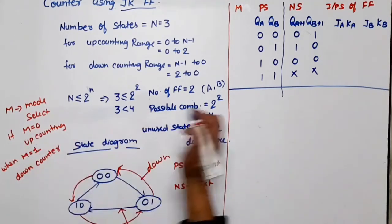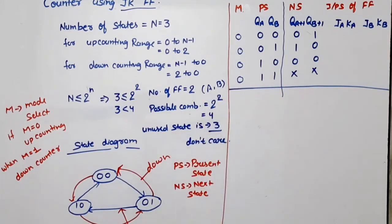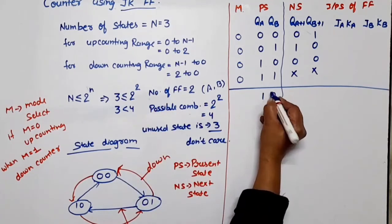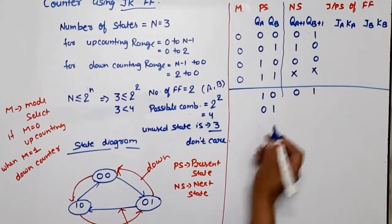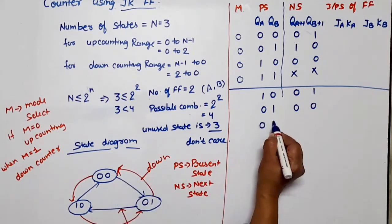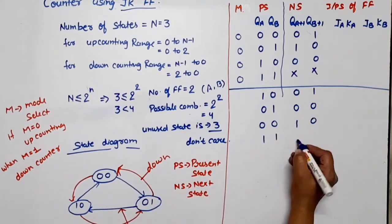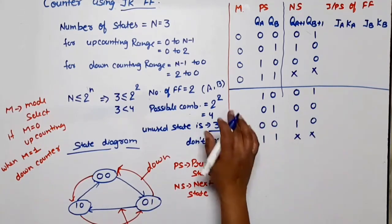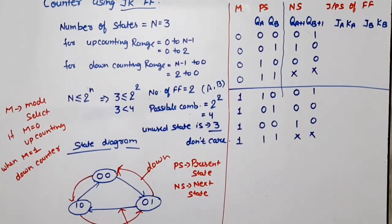For down counting (M=1), it starts from state 2: 10 → 01 → 00 → 10. Again, state 11 is considered as don't care, and the mode select value is 1 for all entries since it's down counting. Now we need the JK flip-flop excitation table to find the JK input values.